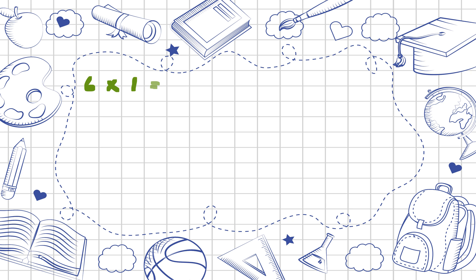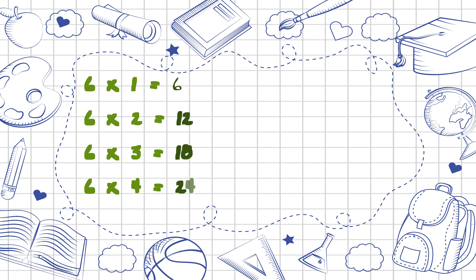Six ones are six. Six twos are twelve. Six threes are eighteen. Six fours are twenty-four. Six fives are thirty.